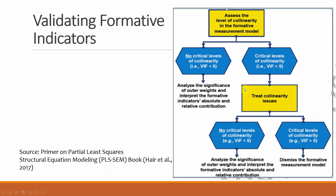Here is a flow diagram one can follow. First, assess the level of collinearity in the formative measurement model. If there are no critical levels of collinearity — that is, all VIF values are less than 5 — we assess the outer weights. However, if there are values greater than 5, there are collinearity issues. After treatment, analyze the significance of outer weights. If there are critical levels of collinearity, you dismiss your formative measurement model. Note: this video is not about treating collinearity issues, so you have to search other statistical outlets for that.